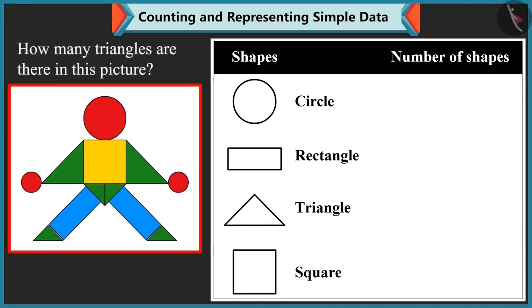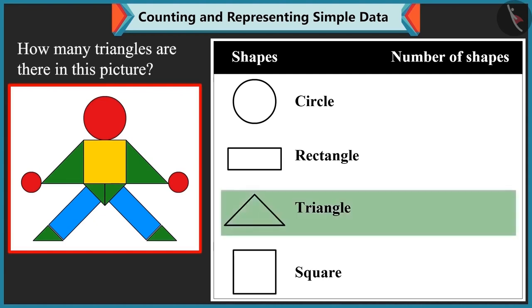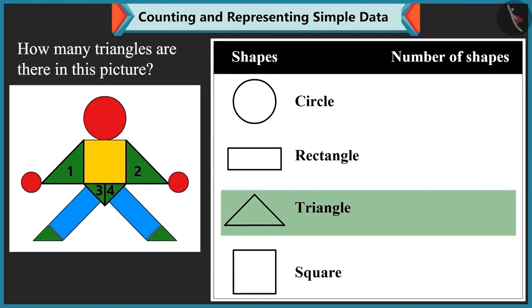Mummy asks how many triangles are in the picture. Bubbly counts 1, 2, 3, 4, 5, 6 — there are 6 triangles.